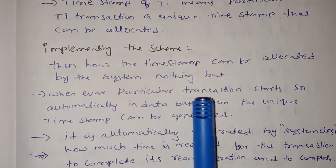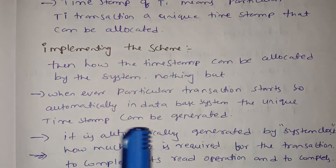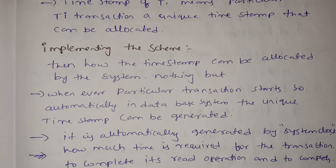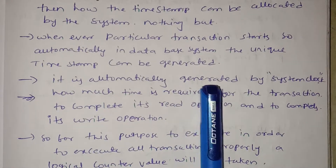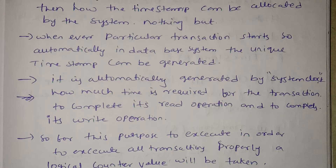When a particular transaction starts, automatically in the database system the unique timestamp is generated. When the transaction execution starts, the unique timestamp is generated by the system clock. All transactions in the database are assigned a timestamp; the system clock allocates the time.